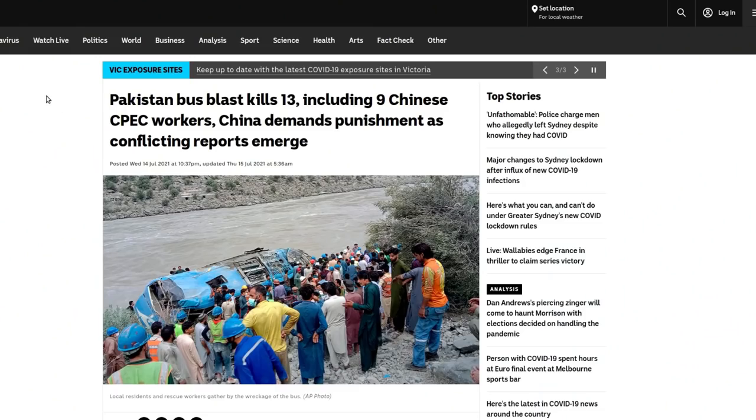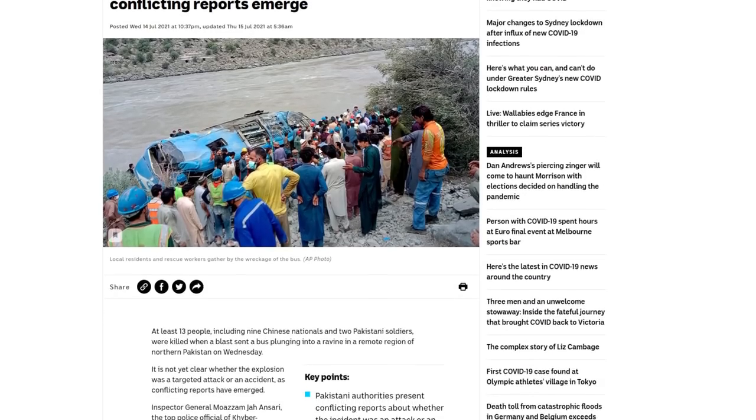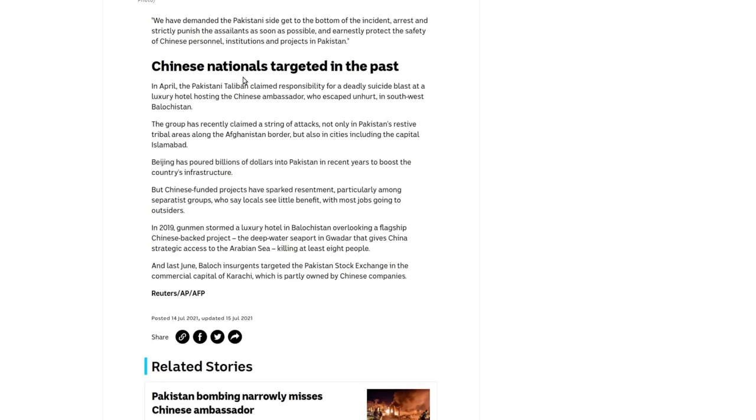This is an article from ABC News Australia. Pakistan bus blast kills 13, including nine Chinese CPEC workers. China demands punishment as conflicting reports emerge. And of course, the West wants this to be as ambiguous as possible so that attention fades and no one really figures out what happened. All the way buried at the bottom of ABC Australia's article is Chinese nationals targeted in the past. And then they admit that there have been all of these attacks, including one on a hotel in Balochistan where the Chinese ambassador to Pakistan was actually staying. That was clearly an attempt to kill the Chinese ambassador to Pakistan.